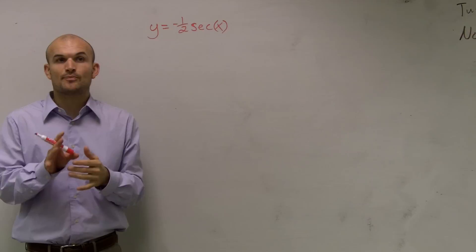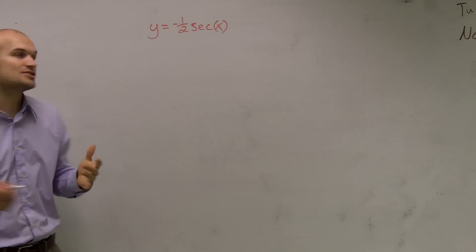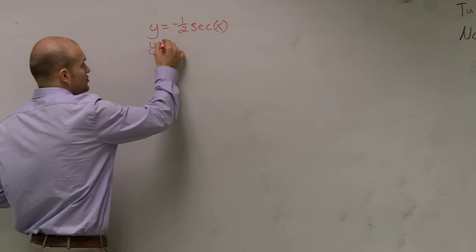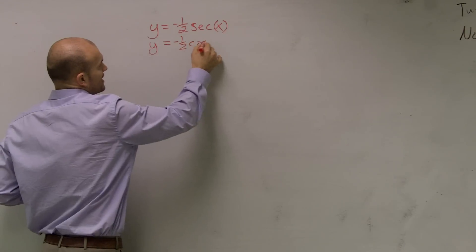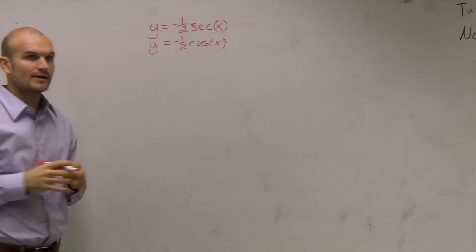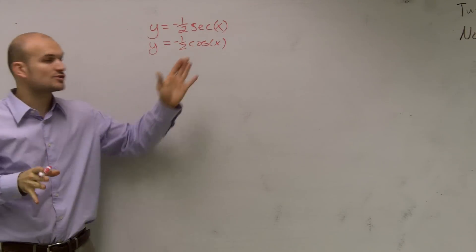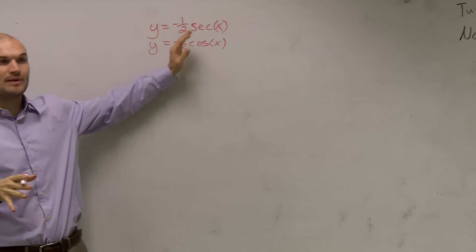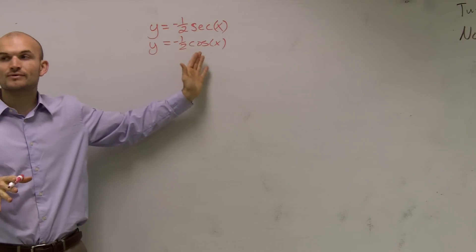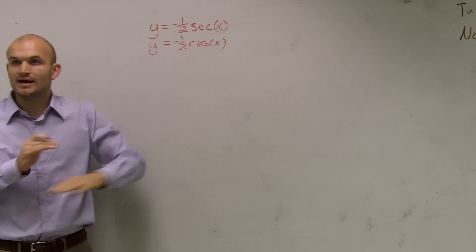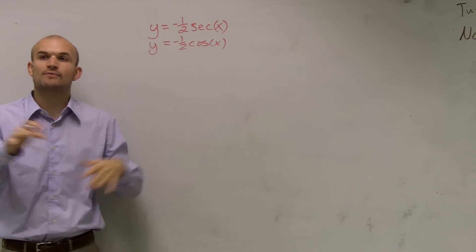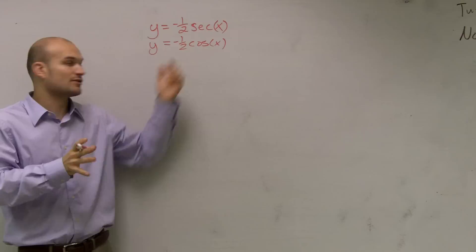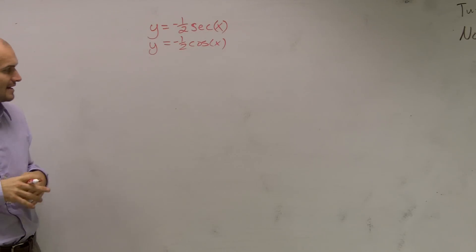We want to graph their reciprocal, which would be cosine of x. So what we want to do for the time period is graph cosine of x, forget about the secant, just graph the reciprocal function. Then after we're done with that, we'll be able to apply from that function how to graph the secant.